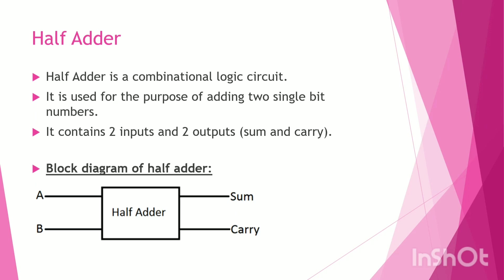A Half-Adder is a combinational logic circuit which is used to add two single-bit numbers. In the block diagram, we have two inputs and two outputs. The inputs are A and B, and the outputs are Sum and Carry.